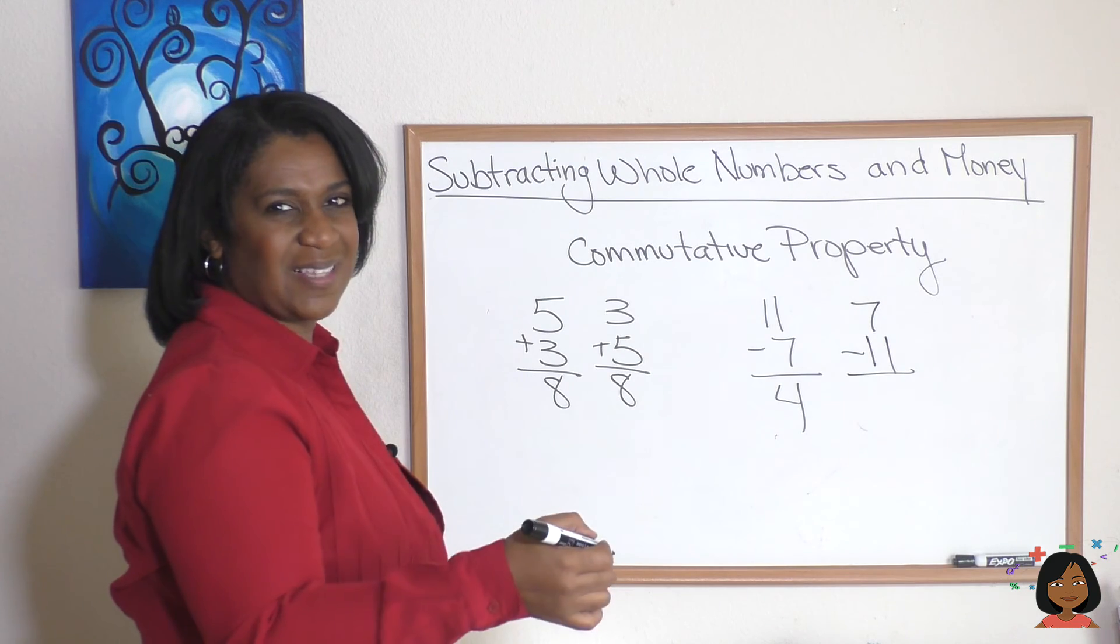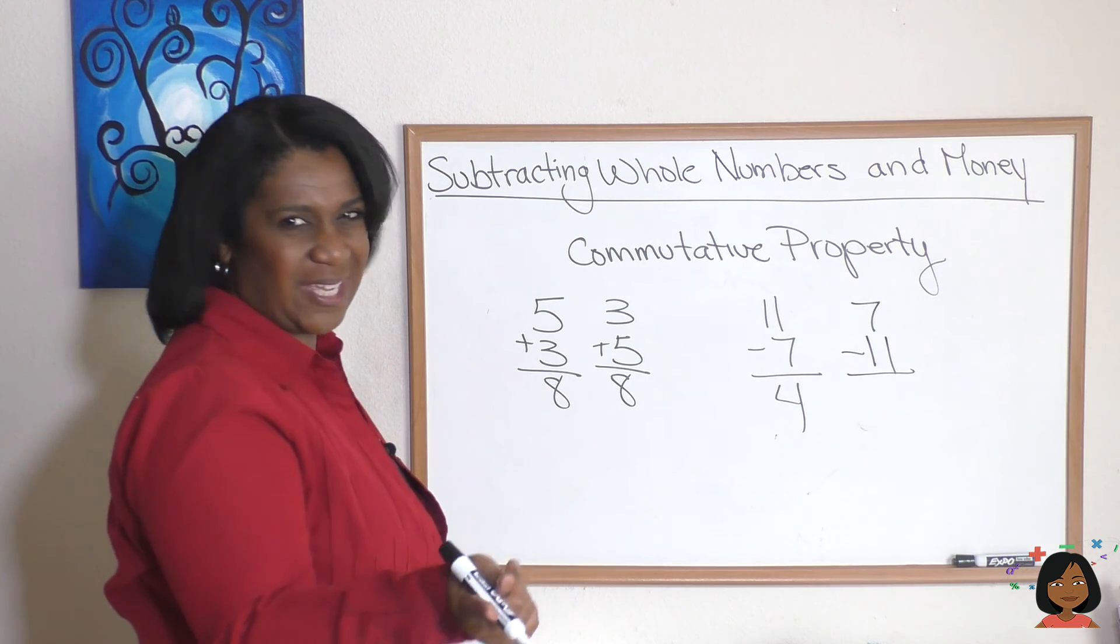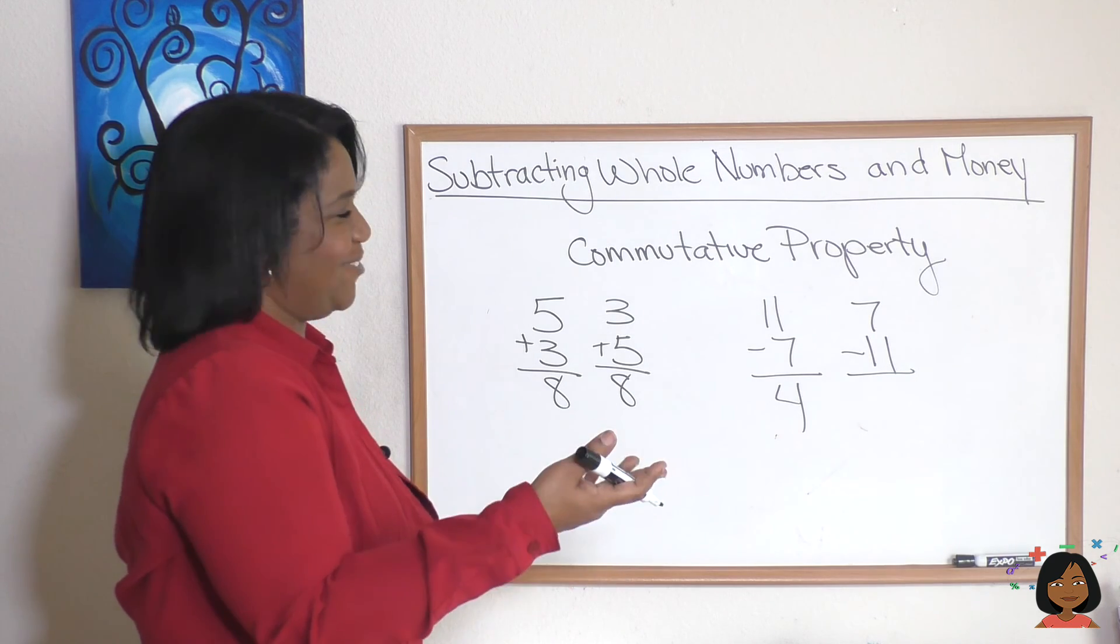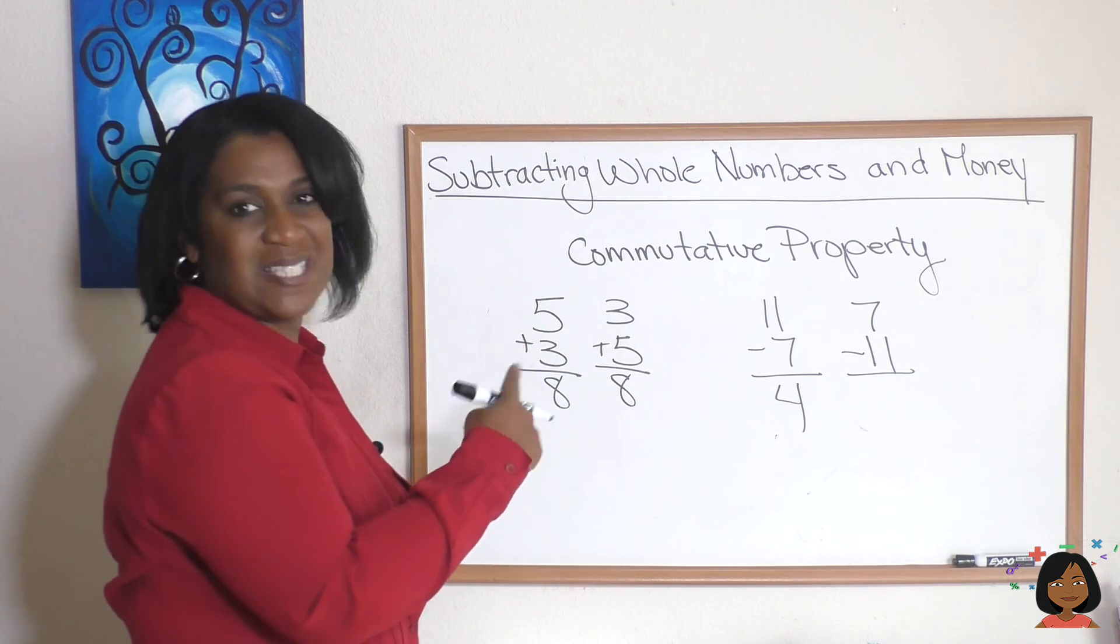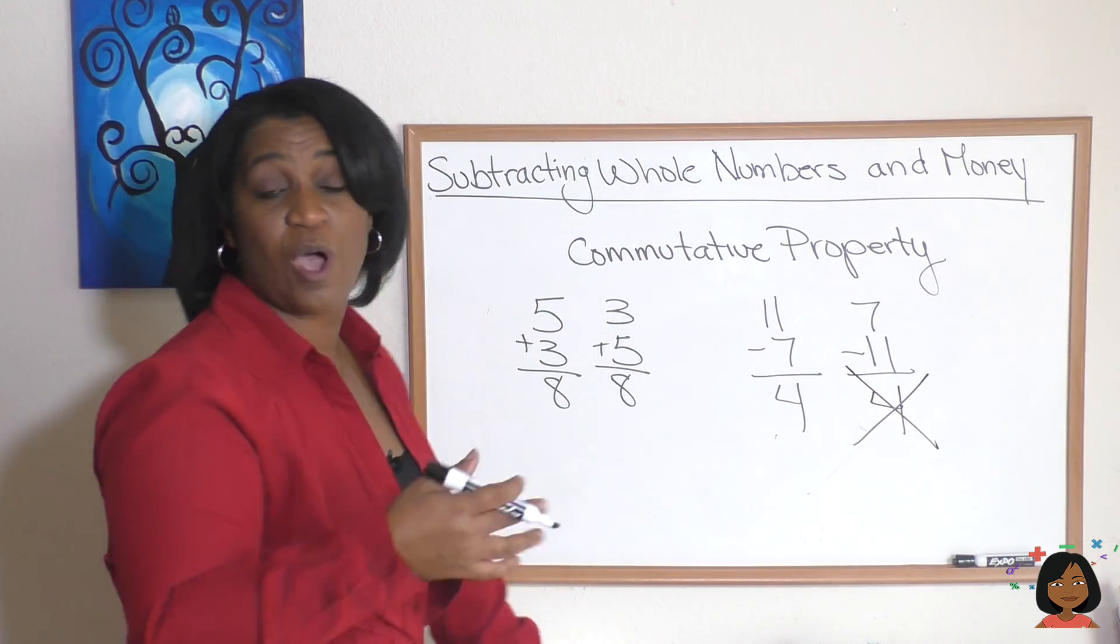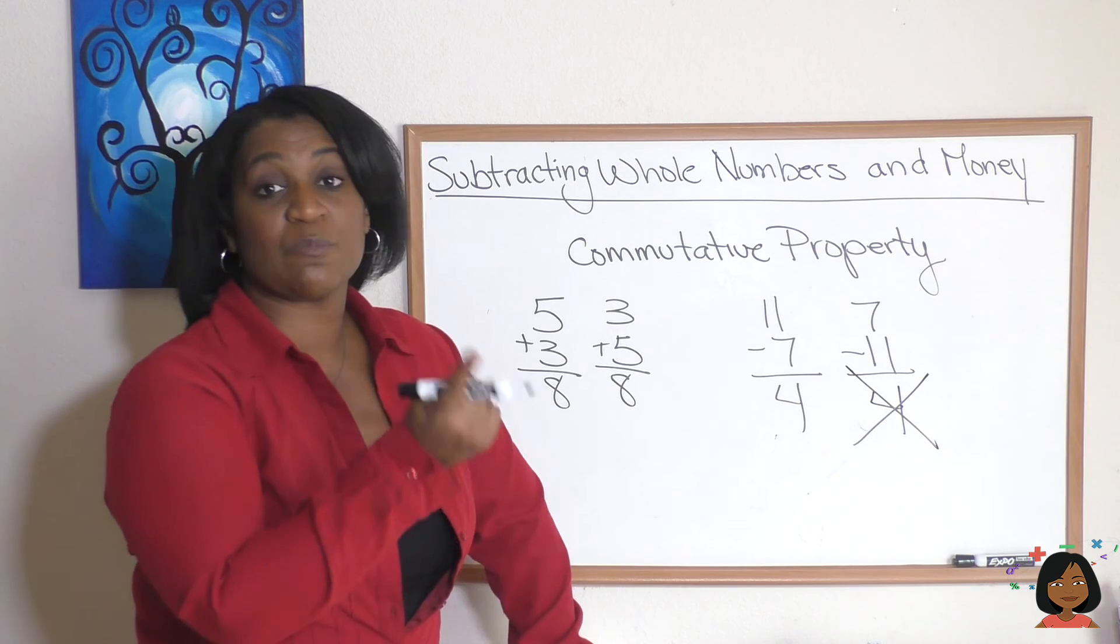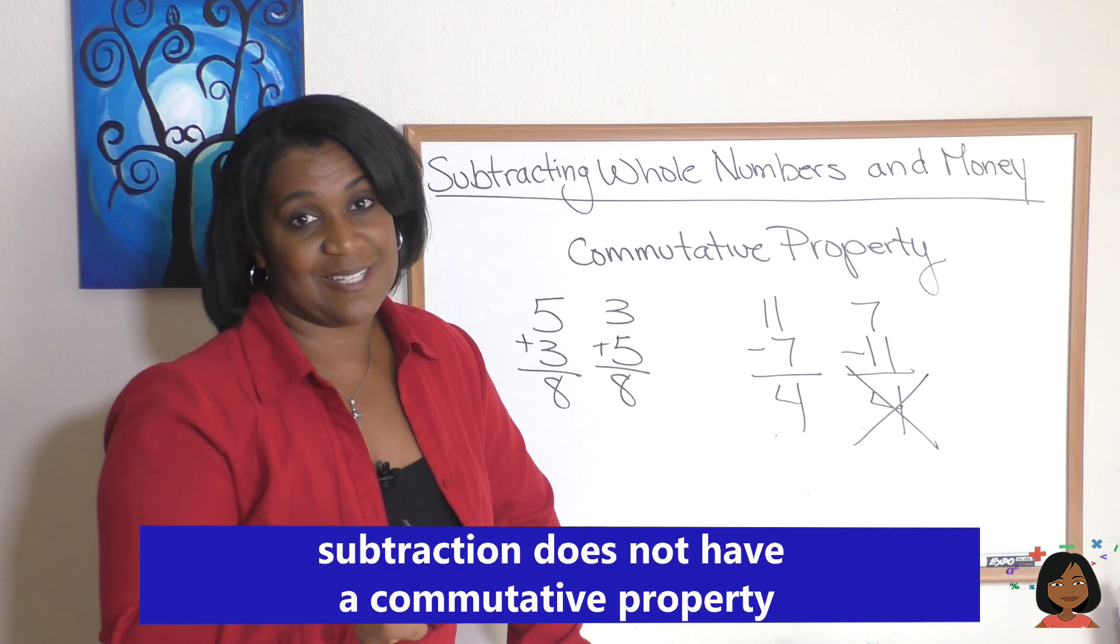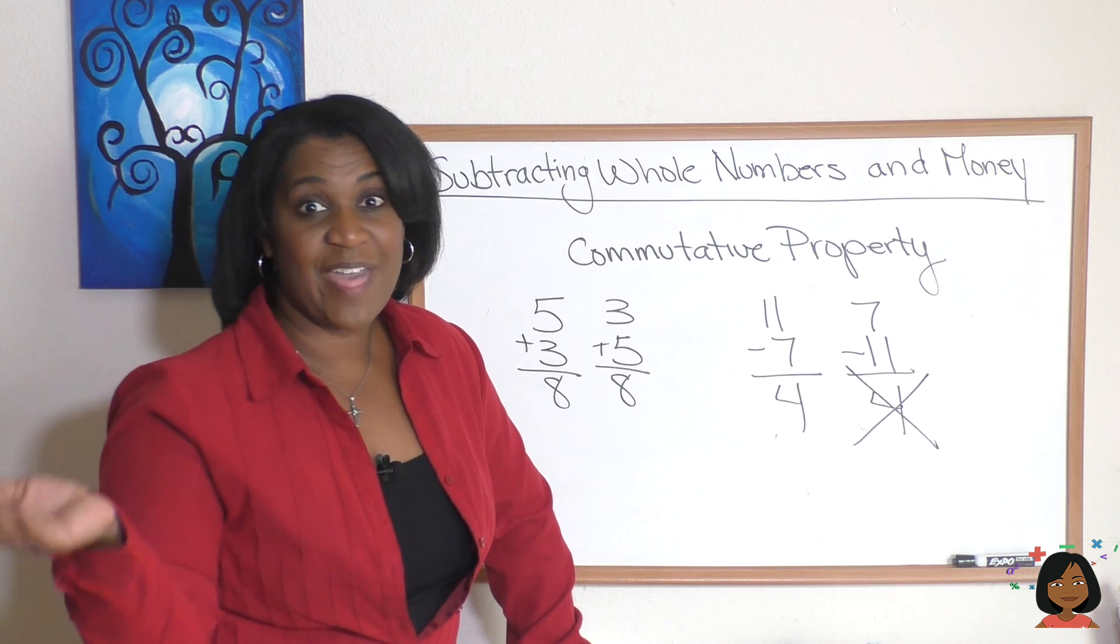Let's try the same thing that we did here over here with subtraction. So we're going to do 7 minus 11. Well, 7 minus 11 and we're not going to get 4, we're actually going to get a negative number which we're not talking about right now. So 7 minus 11 does not give us 4, that's not correct. So what does that mean? It means that subtraction does not have a commutative property like addition does.